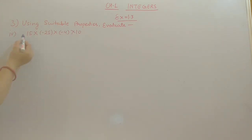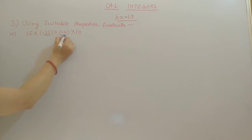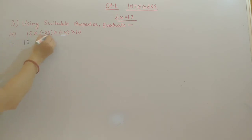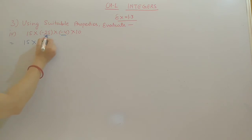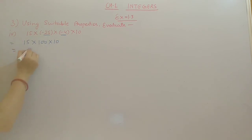Fourth part: 15 into minus 25 into minus 4 into 10. Here, 25 and 4 are present — multiplying them gives 100. So first multiply minus 25 into minus 4: minus into minus gives plus, and 25 into 4 gives 100. Then 15 into 100 into 10 gives 15,000.